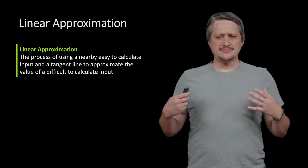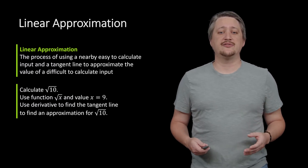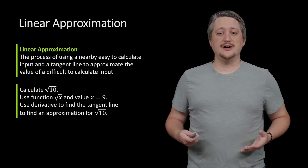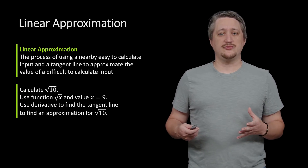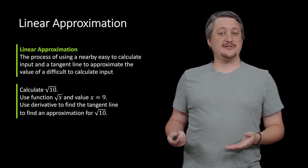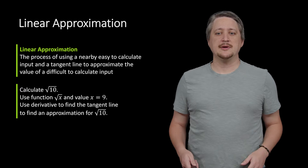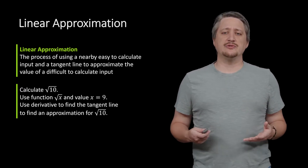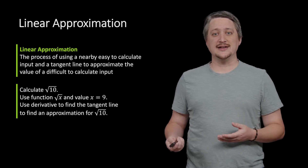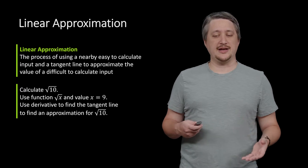The example we're using is calculating the square root of 10. We can think of this as the function square root of x, and we're trying to find the value when x is 10, which is difficult. But nearby, when x is 9, that's easy — we can take the square root of 9, which is just 3. So our nearby easy point is x=9, and the hard point we're approximating is x=10.